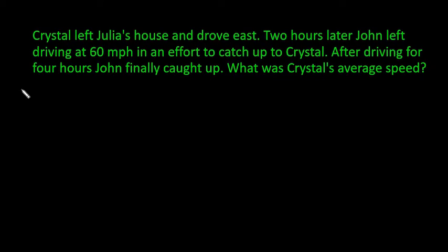So what we have is Crystal left Julia's house. So we have Julia's house over here, and Crystal leaves traveling east. Two hours later, John left driving at 60 miles per hour. So we know that John is also leaving the same destination, and he's going to overtake.